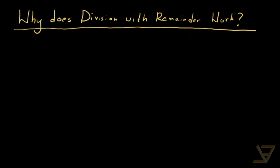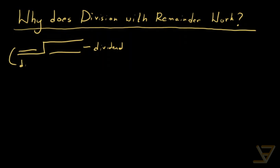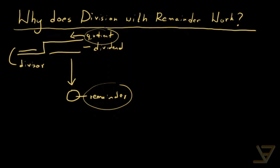Hi everyone. Let's talk about why division with remainder works out the way we want it to. Generally, what we have is something like long division, where the dividend and the divisor go in. Following through the process, we get a remainder and a quotient. The question is: why does the remainder exist? Why does the quotient exist, and why are they unique? That's what we're going to address today.